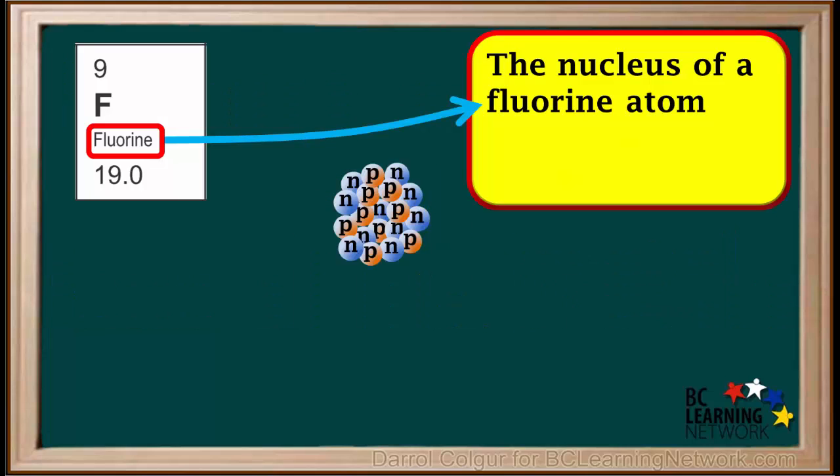The nucleus we've shown here is the nucleus of a fluorine atom. The box for fluorine on the periodic table is shown on the left side of the video here. Fluorine has an atomic number of 9, which means the nucleus of a fluorine atom has 9 protons.